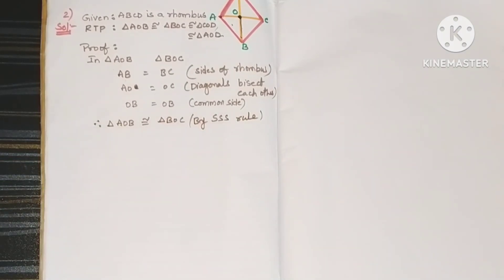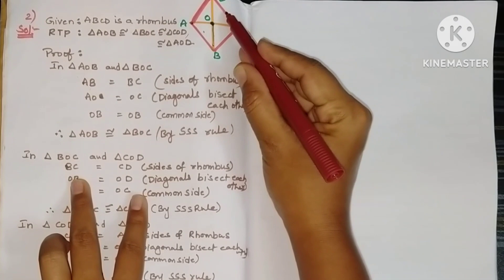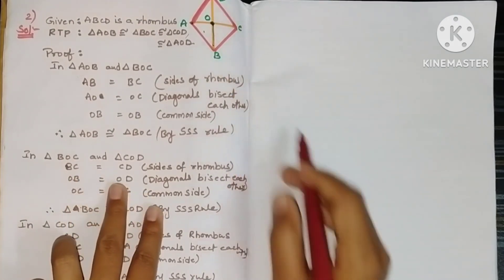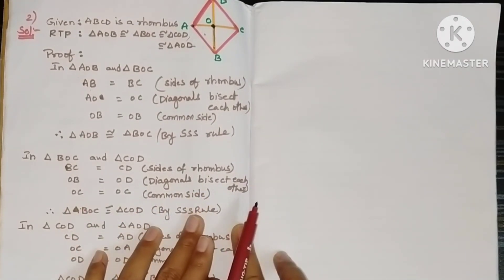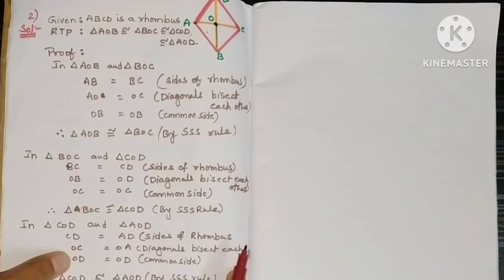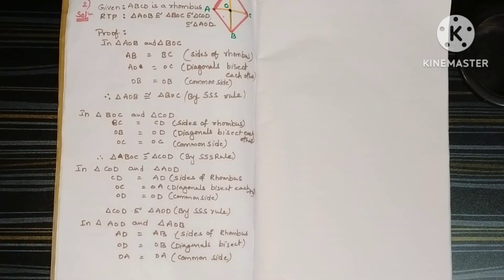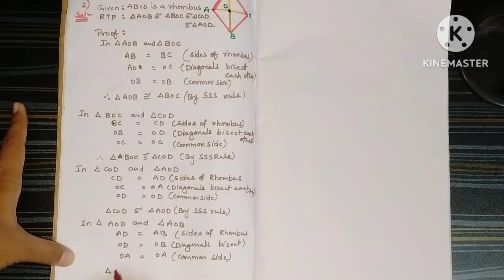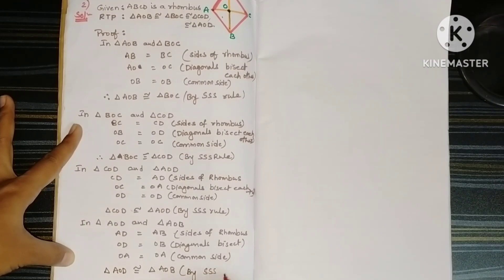Similarly, we can prove BOC and COD are congruent. Comparing triangle BOC and triangle COD: BC equals CD (sides of rhombus), OB equals OB (diagonals bisect each other), and OC is the common side. Similarly, comparing COD and AOD using sides of the rhombus, diagonals bisect each other, and a common side. Finally, AOD and AOB are also congruent by the triples (SSS) rule.